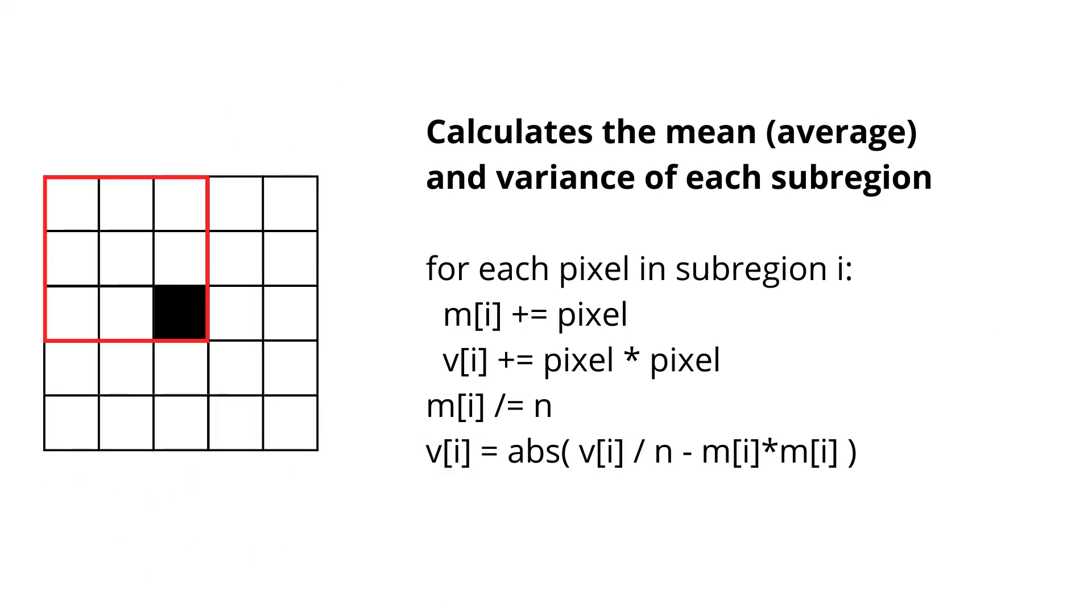Then, for each subregion, we will calculate the mean and the variance of the pixel values. We can iterate over the pixels of the subregion and sum all values in an intermediate variable m for the mean, and the sum of the square of them for the variance, v.